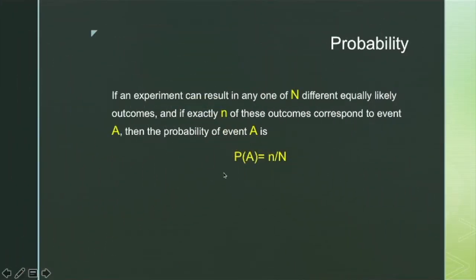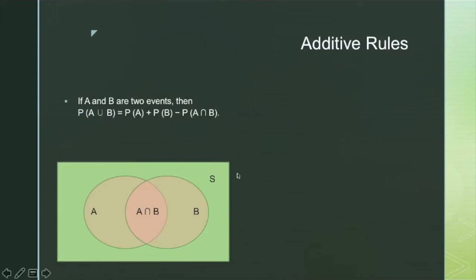Now, after learning what probability is, what a sample space is, and the probability of an event, we will learn a few additive rules for probability. We will understand what the intersection of two events and the union of two events are, and from these rules we will further understand conditional probability, mutually exclusive events, independent events, and their interactions.